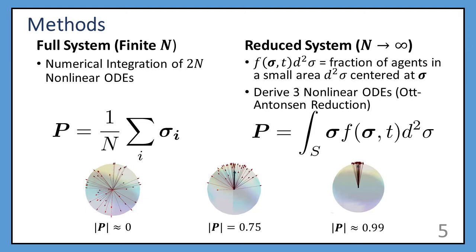And the other is the reduced system, in which we have considered a limit as the number of agents goes to infinity, and we consider a continuous distribution on the sphere. The dynamics of this continuous distribution is given by only three nonlinear differential equations, thanks to the Ott-Antonsen reduction.